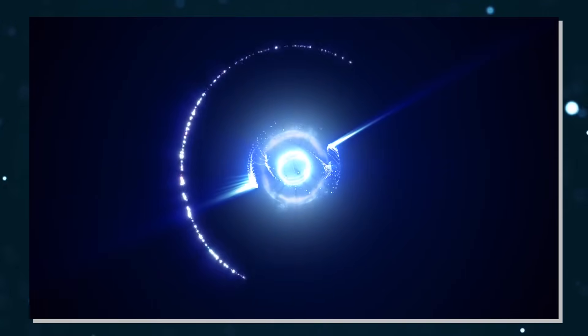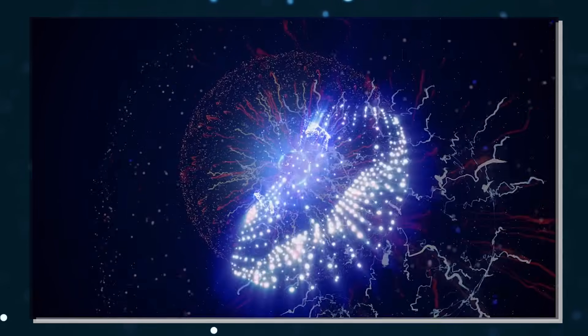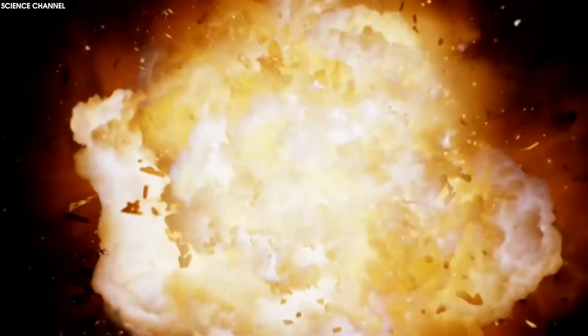As this pressure was the only thing holding the star up against gravitational collapse, the inner core, composed of elements like iron, cobalt, and nickel, now begins to implode.